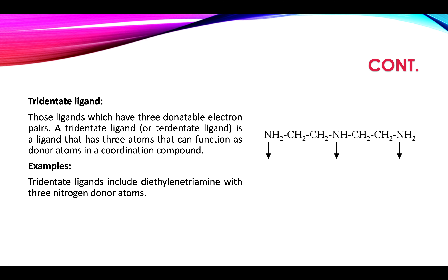Tridentate ligands have three donatable electron pairs and donate three electron pairs at a time to the central metal atom. Example: diethylene triamine — it is called 'triamine' because it has three NH groups (NH₂ at both terminals and NH in the middle), connected by two ethylene groups. It has three nitrogen atoms, all of which can donate their electron pairs to the central metal atom, making it a tridentate ligand.